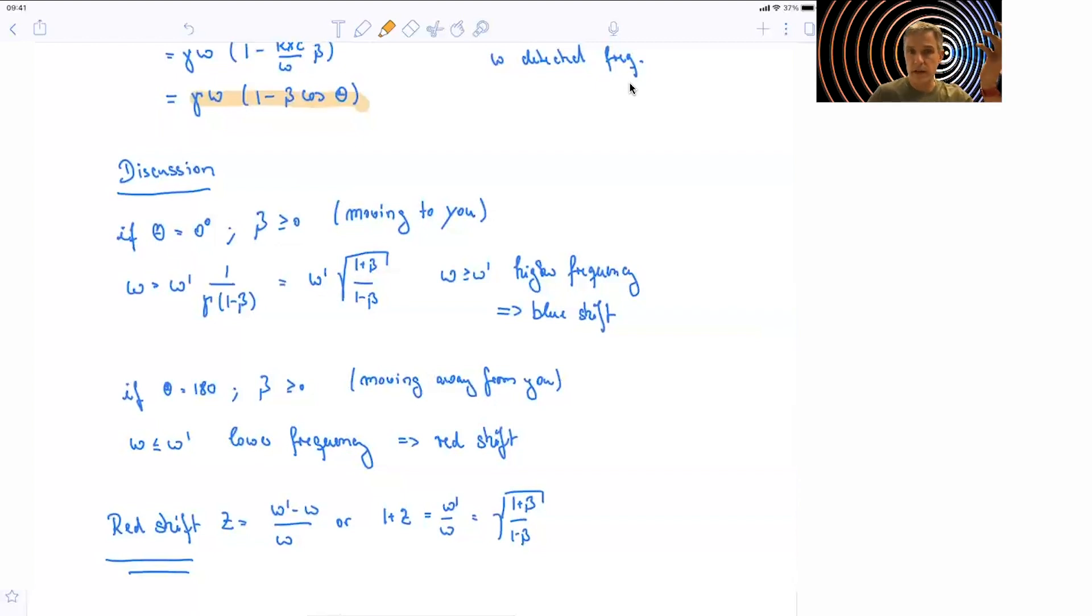The opposite scenario is where theta equals 180 degrees, or beta greater than 0, or the other way around. We could have defined this also as theta equals 0 and beta negative. In this case, omega is smaller than omega prime. So the frequency is lower, meaning that the light we observe is redshifted.